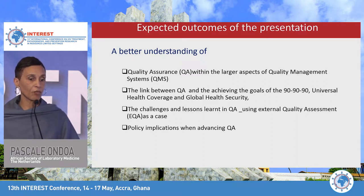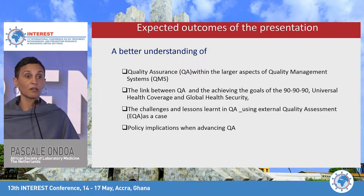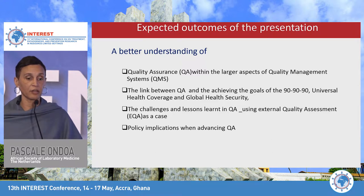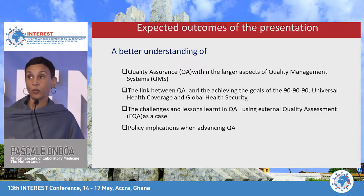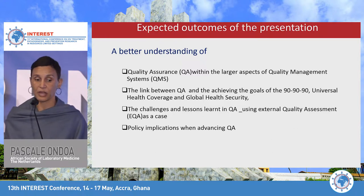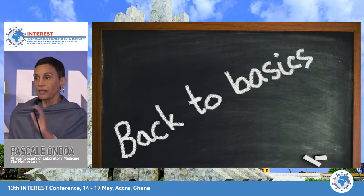I hope you'll have a better understanding of what quality assurance is within the larger aspects of quality management systems, what is the link between quality assurance and achieving the goals of 90-90-90, universal health coverage and global health security, what are the challenges and lessons learned in quality assurance using external quality assessment as a case, and finally, what are the policy implications when we want to advance quality assurance.